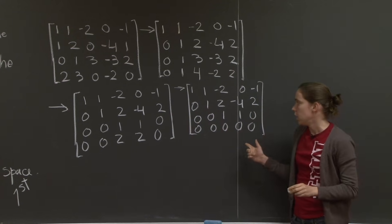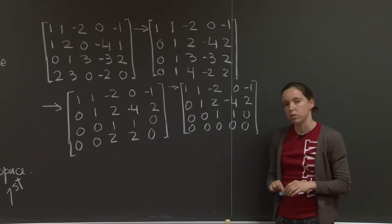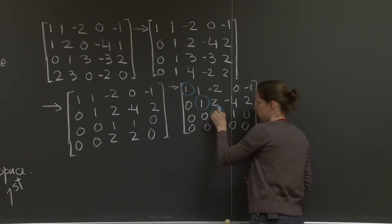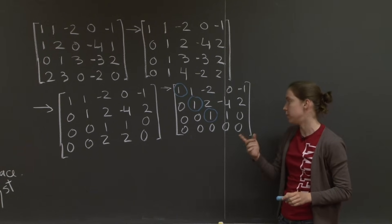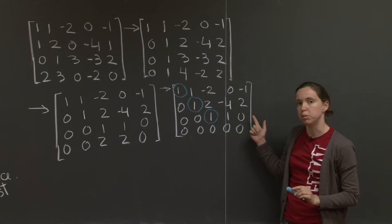All right. We're done with elimination, and so let's circle our pivots. All right, here are our pivots. We have three pivots. And so these three rows are linearly independent.